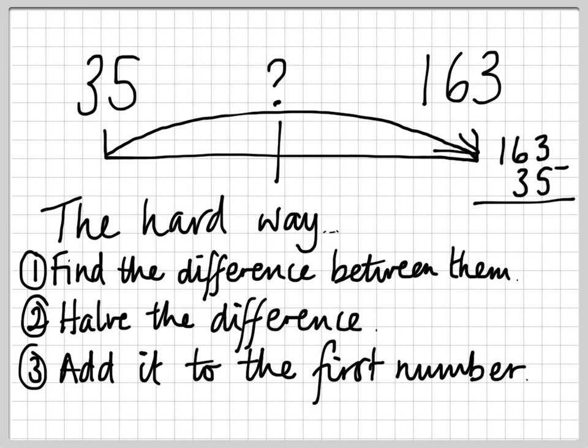You can't do three take away five, so let's exchange a 10 for 10 units. 13 take away 5 is 8, 5 take away 3 is 2, and 1 take away nothing is 1. Stage 1 done.